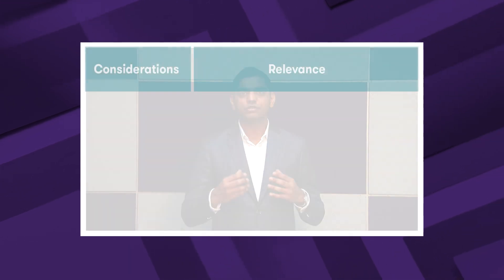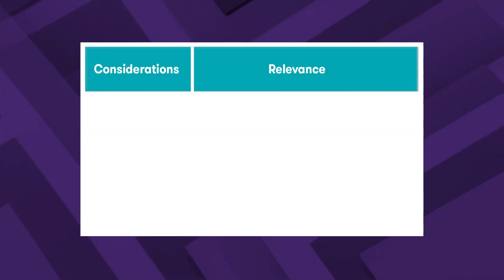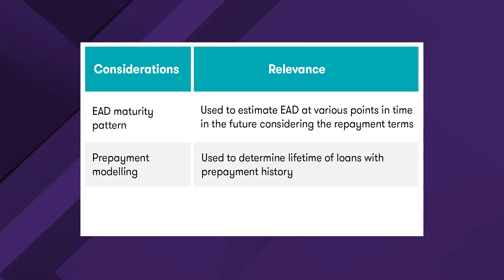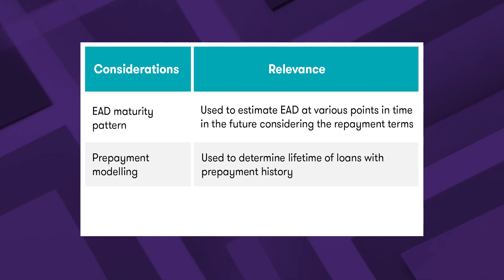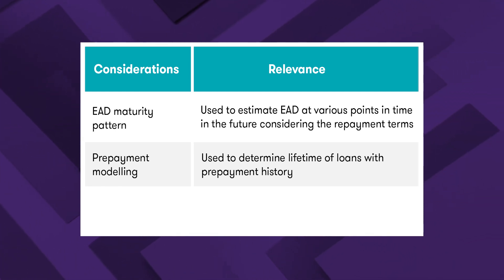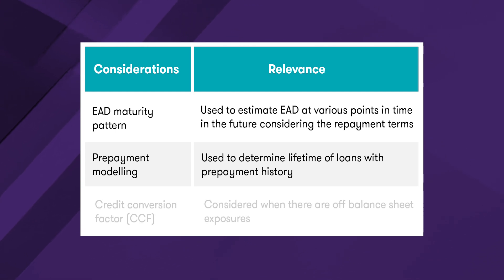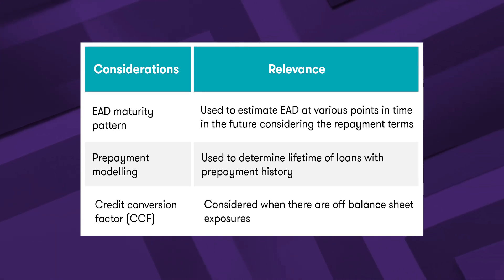Finally, there is EAD — a complex area in its own right, especially when dealing with revolving facilities or instruments like credit cards. Sometimes entities may simply consider the balance sheet outstanding as their EAD for on-balance-sheet exposures. However, for more complex scenarios, you might need to consider typical maturity patterns and prepayment behavior and rates for more accurate EAD estimates. For off-balance-sheet exposures, the use of a Credit Conversion Factor (CCF) complicates things quite significantly.